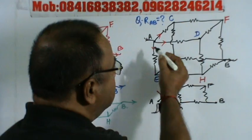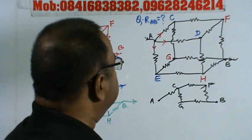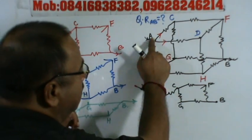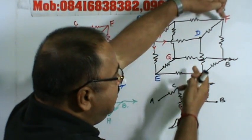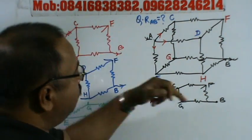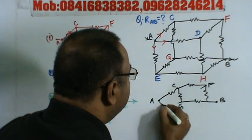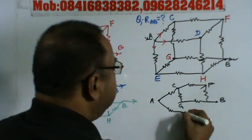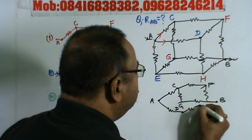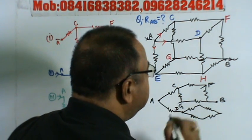For branch AD, the current entering AD is also divided into two parts: DF and DH. Finally it reaches B through F to B and H to B. So this branch also has one resistance AD in series with a network of four resistances reaching B.